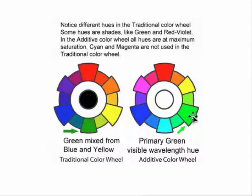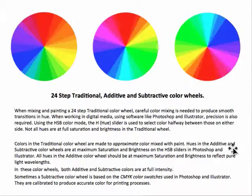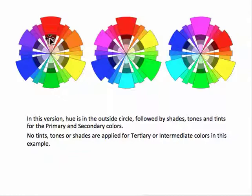For more color options we can produce a 24-step color wheel: three primary, three secondary, six tertiary colors, plus twelve intermediate. Here are three different versions of 24-step color wheels with many more colors in between. I've laid it out with circles in the center — a 24-step color wheel for each system — and I can include tints, tones, and shades, with examples so we can explore those a little bit better.